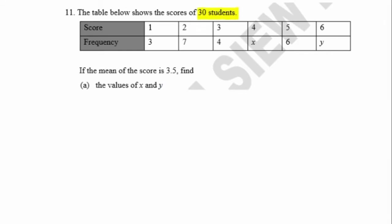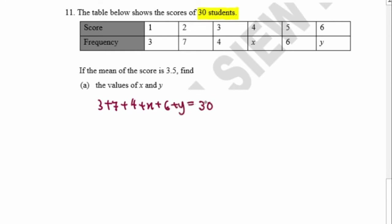We have 30 students, so we'll have 30 data points. Our data here is referred to the frequency: 3 plus 7 plus 4 plus x plus 6 plus y equals 30. Simplifying this equation, we get x plus y equals 10.